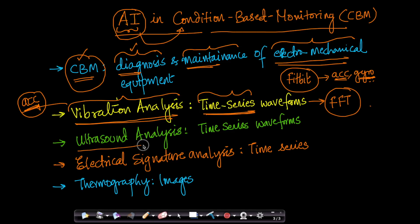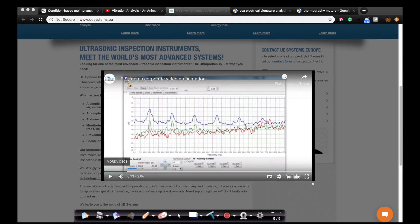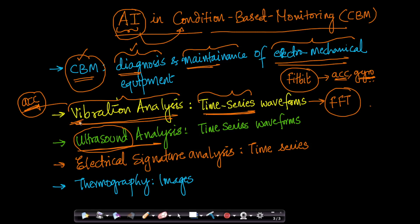The next technique is ultrasound analysis, which is very similar to vibration analysis but done at ultrasound frequencies. There is a very interesting company called UE Systems, which is one of the best companies for ultrasound inspection of equipment. Even in the ultrasound case, the data that you collect is effectively time series data — of course at ultrasound frequencies. This time series waveform can also be converted into Fourier space using fast Fourier transform, and a lot of analysis can be performed on top of it.